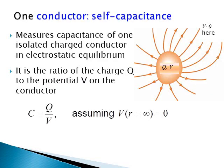Self-capacitance measures capacitance of one isolated charged conductor in electrostatic equilibrium. In this case, we place charge Q on the capacitor and wait long enough so that the charge is fully distributed on the capacitor. The potential on the capacitor will be constant at any point of the capacitor.